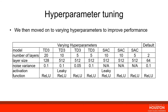For number of layers we looked at 20, 10, and 5, compared to the default of 2. For layer size we looked at 128 and 512, compared to the default of 64. For noise variance we tried decreasing to 0.05 compared to the default of 0.1. For activation function we looked at leaky relu in addition to the default of relu.